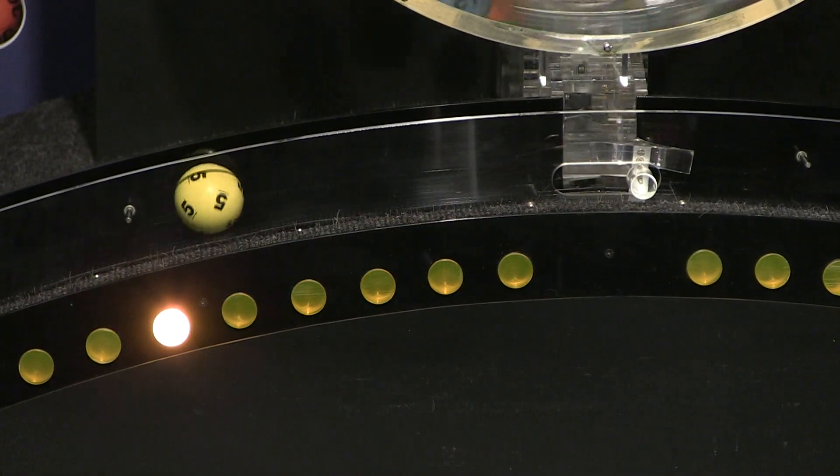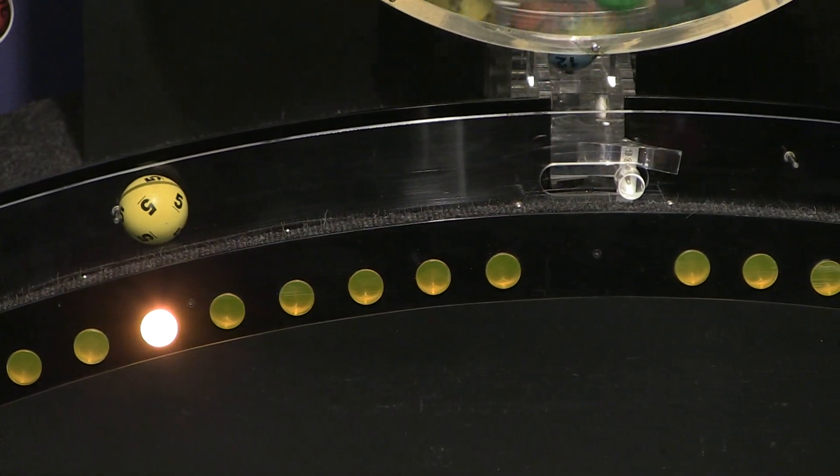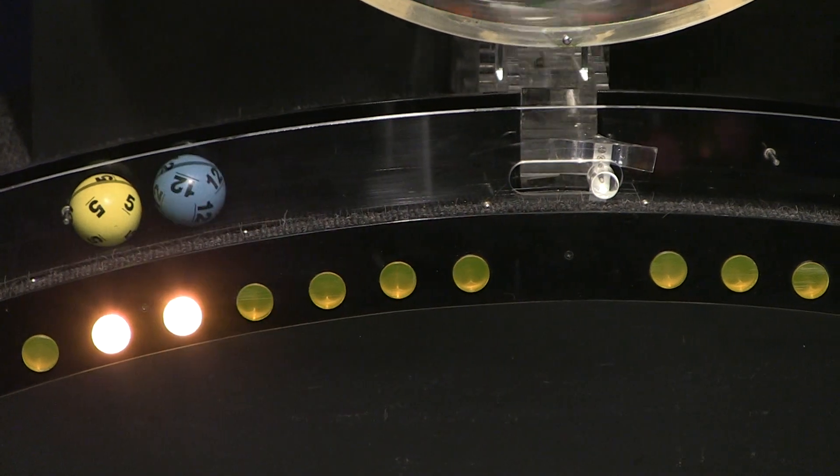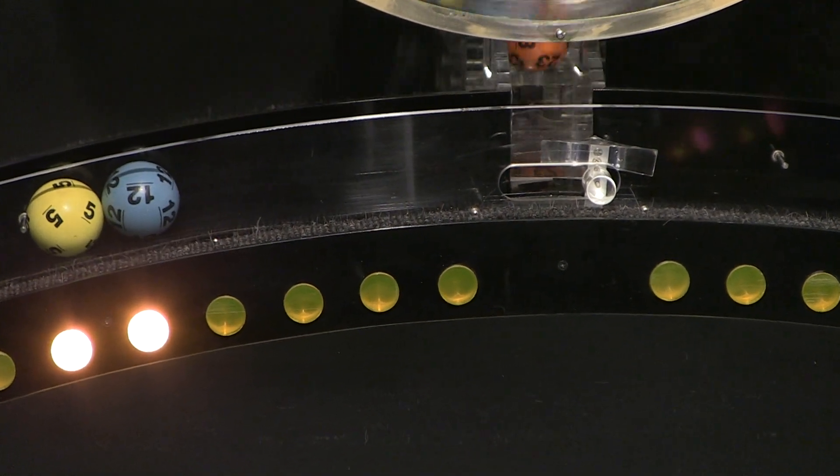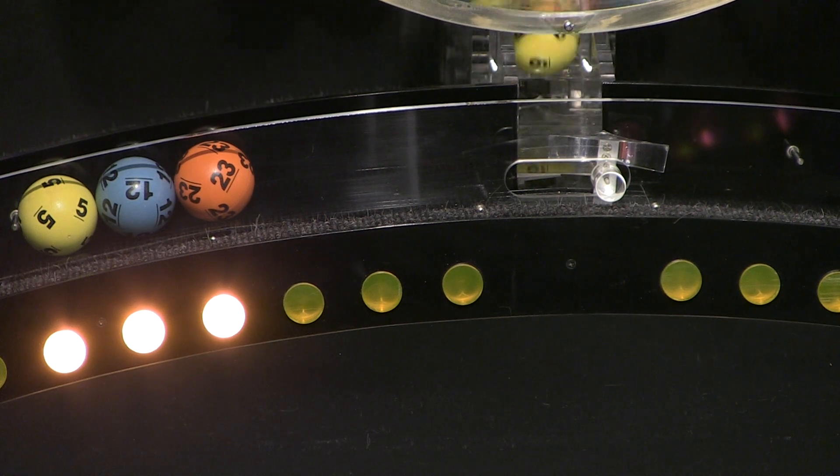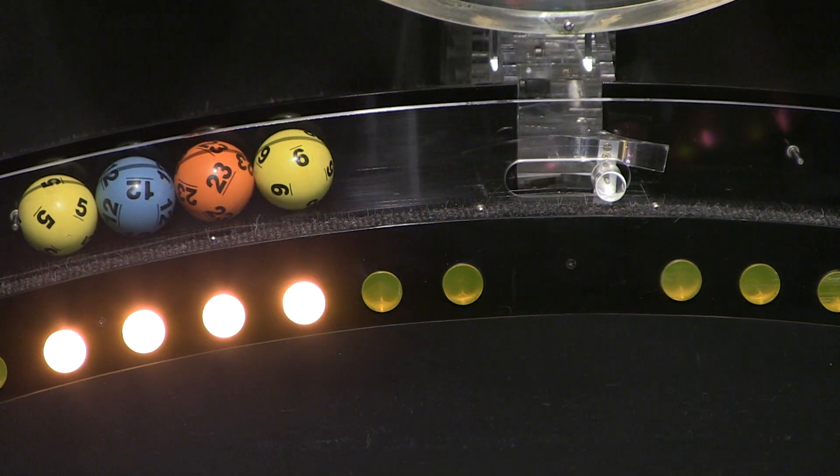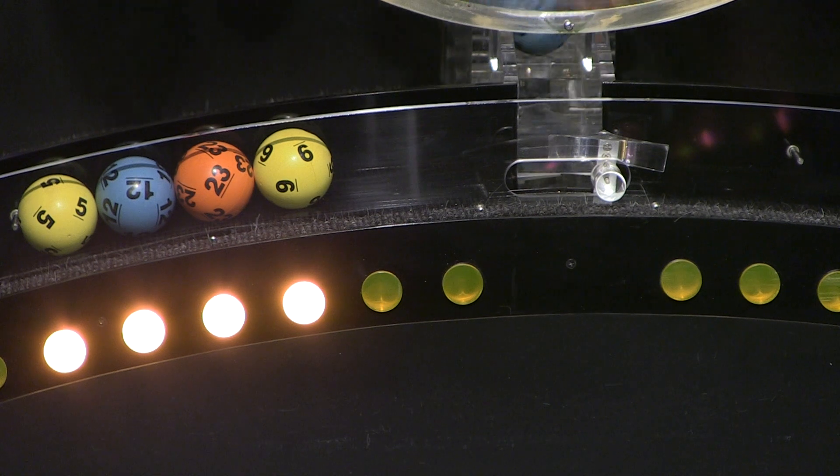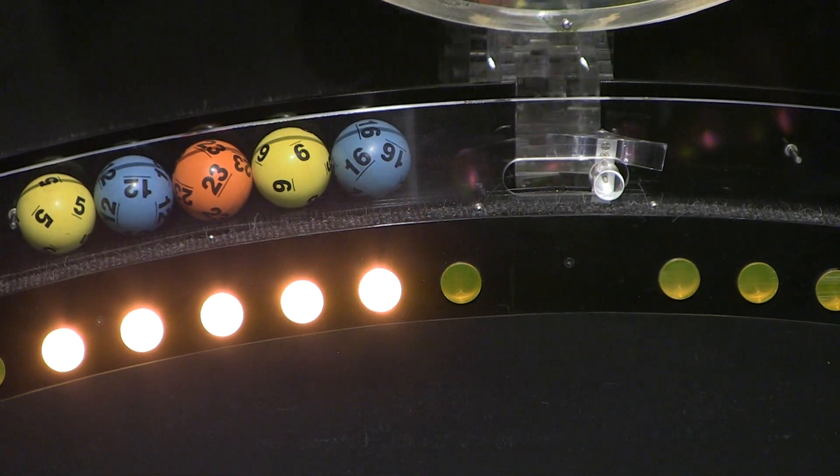Our first number up is number 5. Rolling right behind that we have number 12. And here comes number 23. Up next is 9, and the final ball in this sequence is number 16.